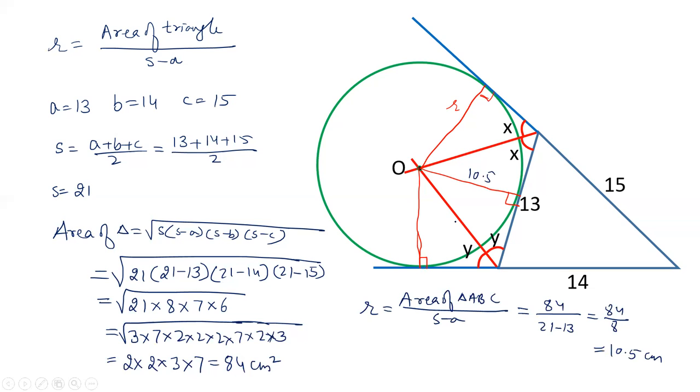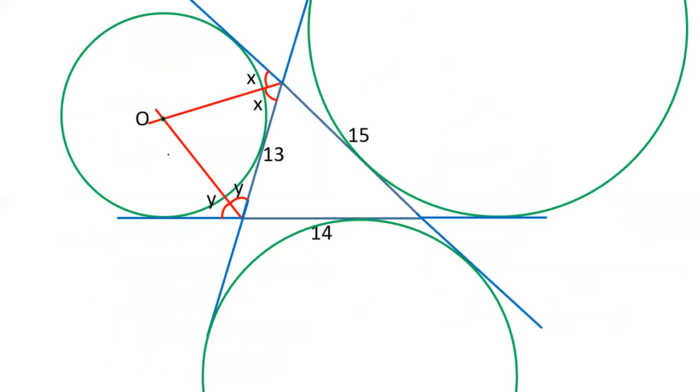Now let's see what are the other circles which can be drawn. There are 3 excircles which can be drawn. This is the one which we have just now calculated, 10.5, area of triangle upon S minus A. Now for this, this radius of this circle will be area of triangle upon S minus B, which is 14. 84 is the area of triangle, S we have calculated as 21 and this is 14. So 84 by 7, that is 12 cm. So radius of this circle is 12 cm.